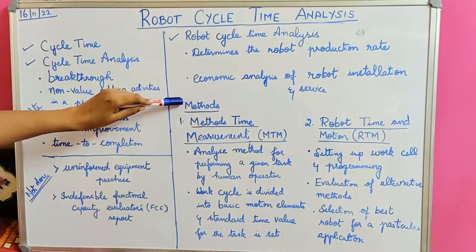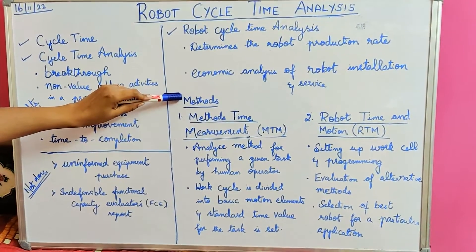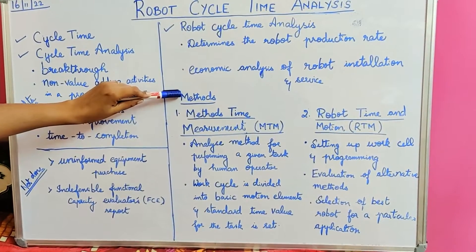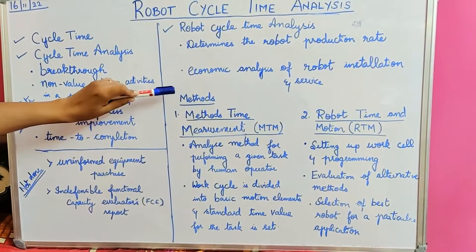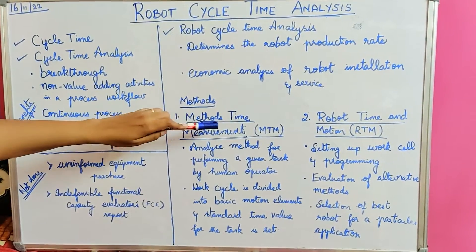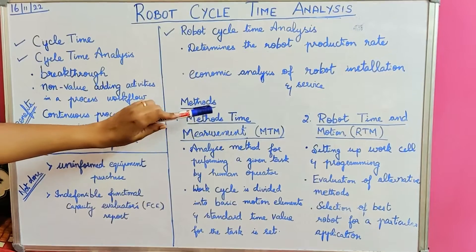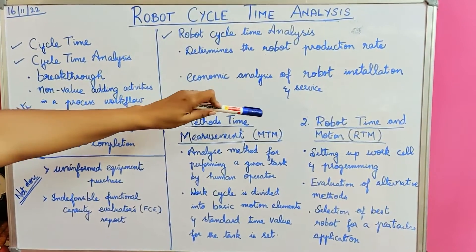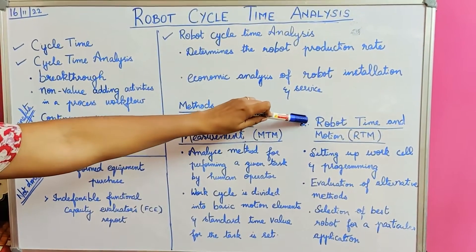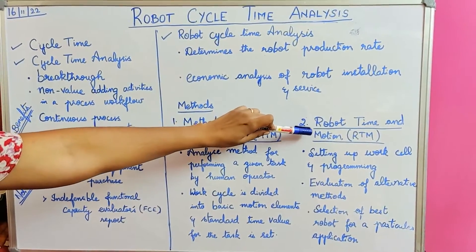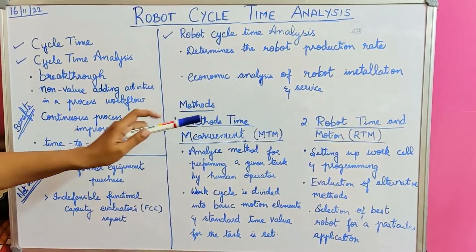There are two methods of cycle time analysis. The first method is Method Time Measurement, denoted as MTM. The second method is Robot Time and Motion, denoted as RTM.